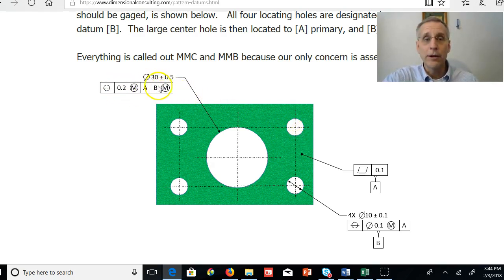Because A primary takes out three degrees of freedom, the pattern of four holes takes out the other three degrees of freedom, and that fully constrains the part. And this hole is located to these holes.